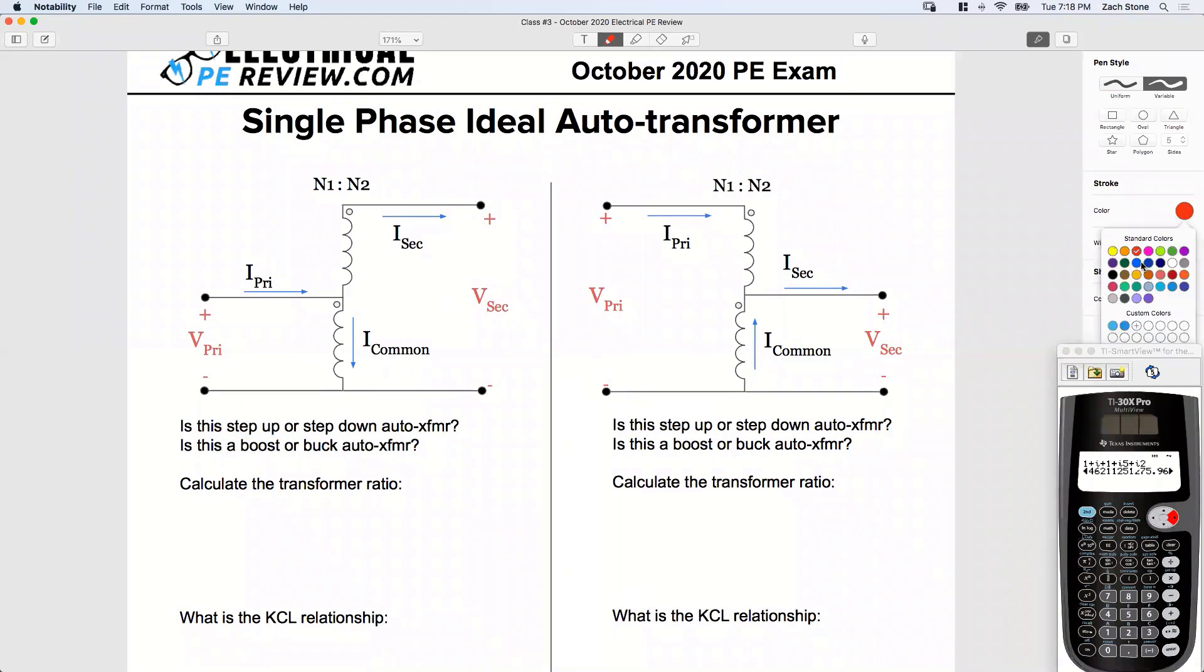Let's switch to blue. Here is blue. Yeah, how do we know this is a step up? Which side has more windings? I got lost in the chat there for a second. Yeah, more coils on the secondary side. Exactly.